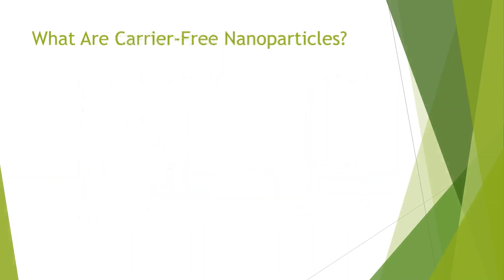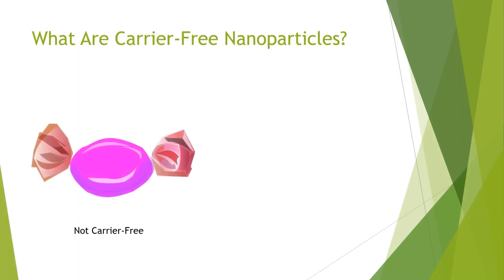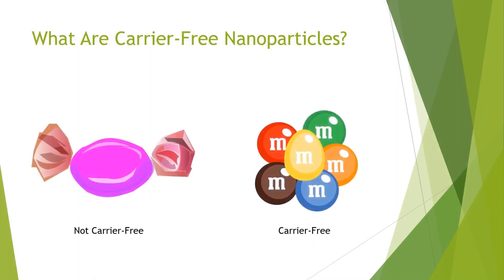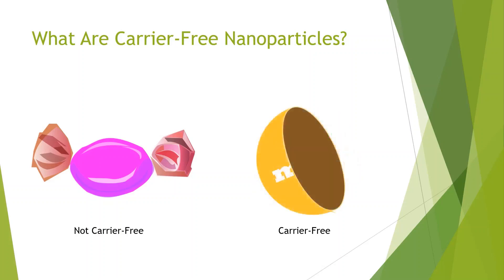So, what are carrier-free nanoparticles? A conventional nanoparticle is similar to a plastic-wrapped chocolate, while an M&M would represent a carrier-free nanoparticle. Imagine that the chocolate is a drug. The wrapper of the conventional nanoparticle is not meant to be eaten. For the M&M, the chocolate is still the drug, but now the outer layer of the M&M not only serves as a protective layer, but it is also edible.